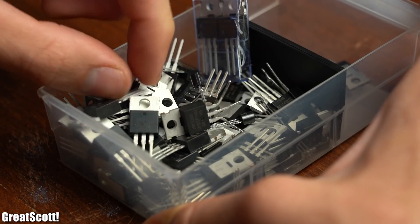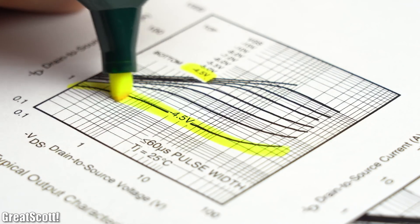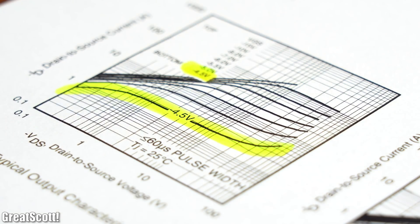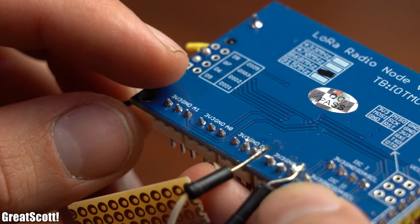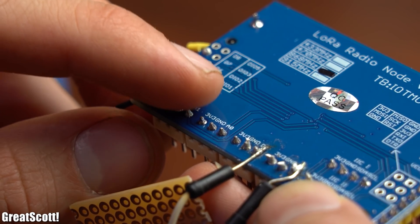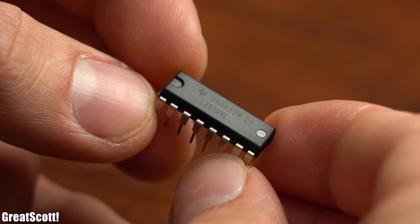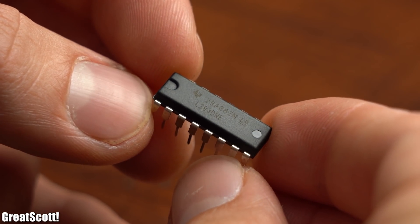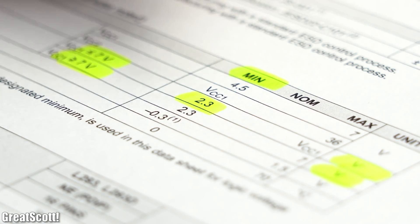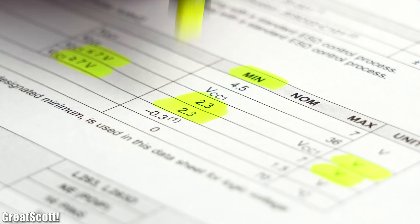But while searching for suitable MOSFETs I noticed that I didn't have any logic level P-channel MOSFETs lying around which are definitely mandatory when working with such a 3.3V system. But instead I found this L293D IC which actually includes an H-bridge and can be controlled by 2.3V logic levels, perfect.